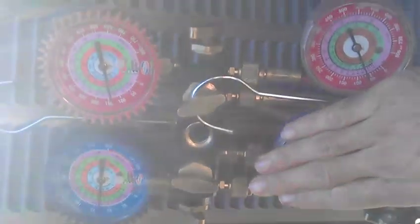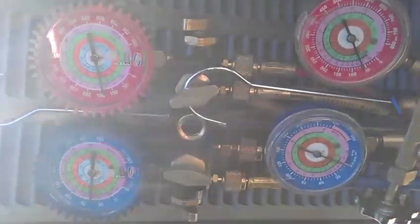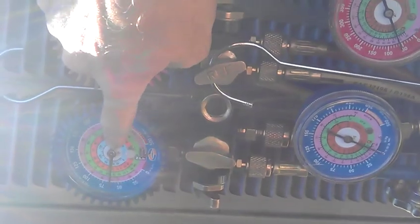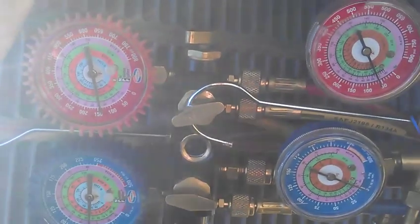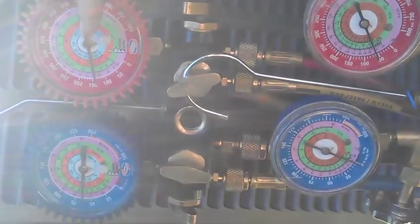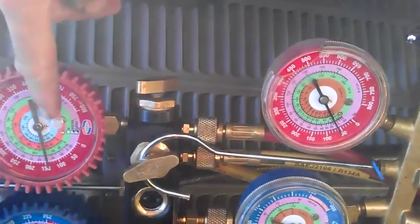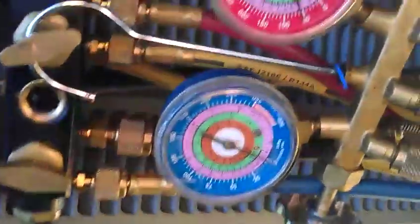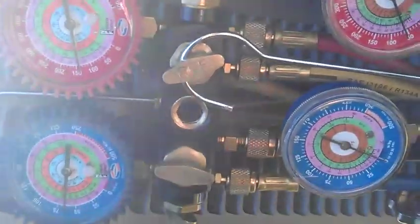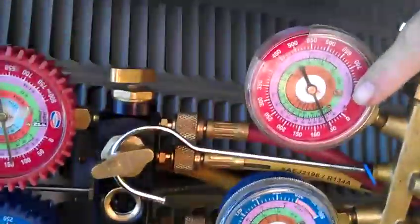Now this gauge here is not being used for anything, so totally ignore it. This gauge is true suction. This one is my liquid line and this one is hooked to the suction line over here on the system like I showed before.